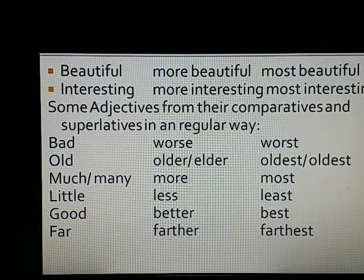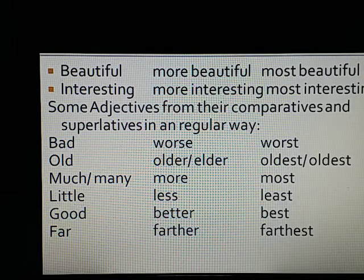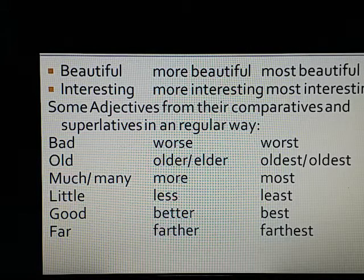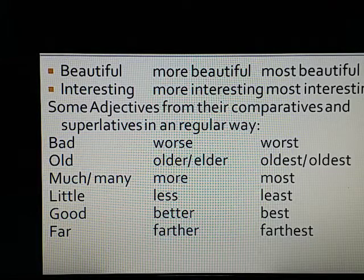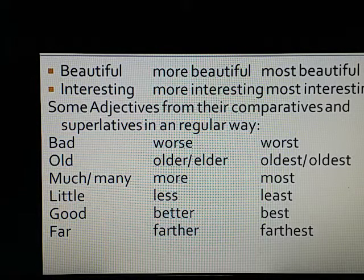Some adjectives form their comparatives and superlatives in an irregular way. For example: bad, worse, worst; old, older, oldest; much/many, more, most; little, less, least; good, better, best; far, further/farther, furthest/farthest.